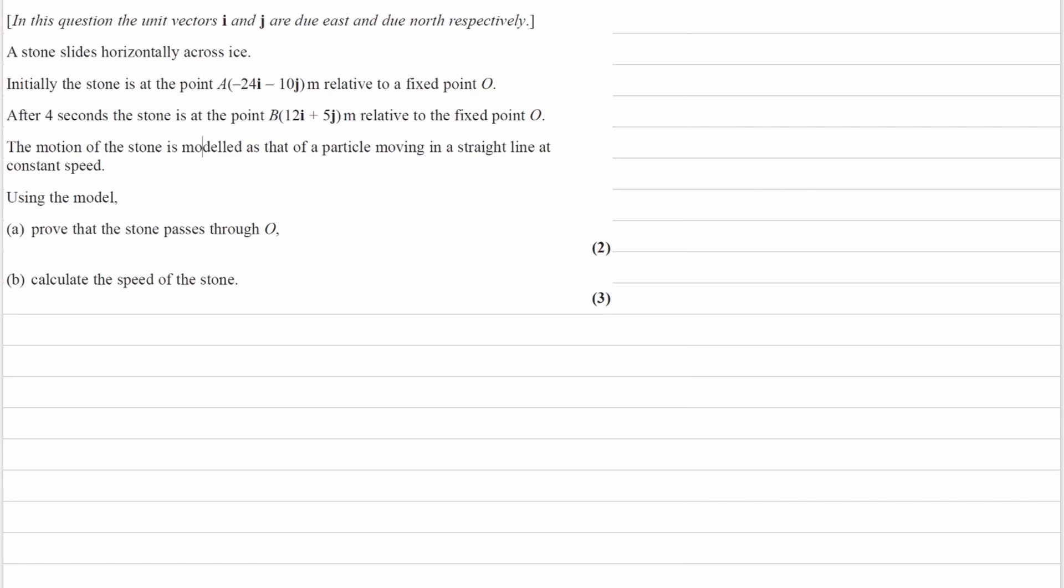We're starting at position vector A, which is (-24, -10), and position vector B is (12, 5).